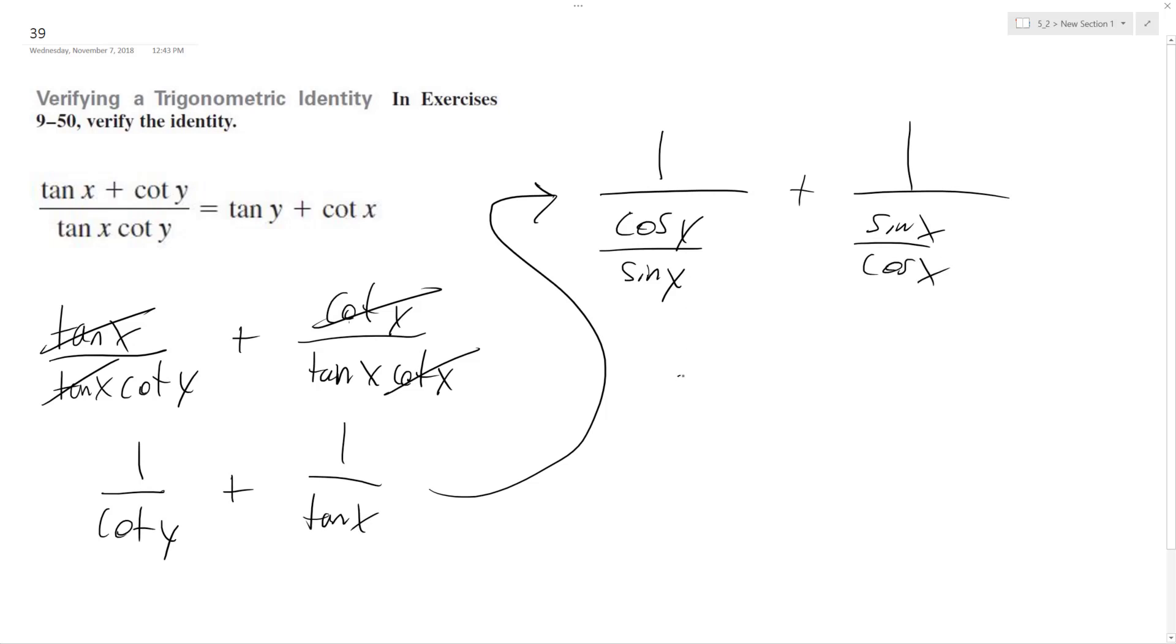So the same thing as sine y over cosine y, because this flips over, plus cosine x over sine x, and you're left with tangent y plus cotangent x, and this verifies our trig identity.